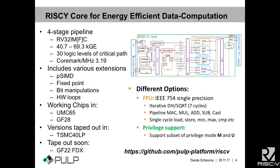The area is from 40 to 70 kilogates depending on the floating-point unit, and we have quite a high CoreMark per megahertz — it's really optimized for IPC. It has been extended for data computation-centric applications: packed SIMD, fixed-point, bit manipulation, hardware loops, auto-increment load and store. This core has been taped out several times — we have working chips in 65 and 28 nanometers, and recently in TSMC 40 low-power. At the end of the year, we're taping out with GlobalFoundries 22 FDSOI.